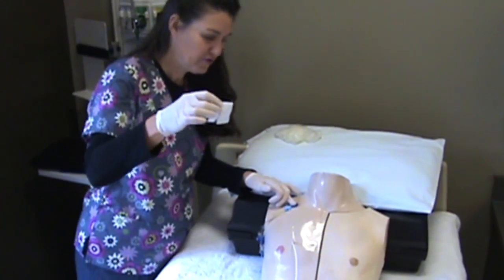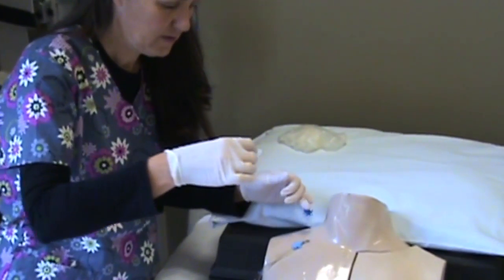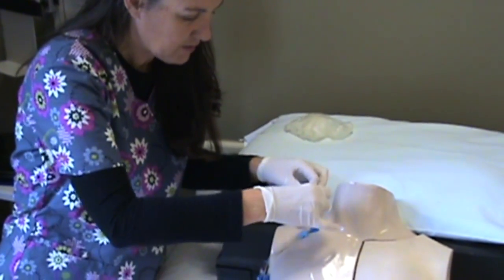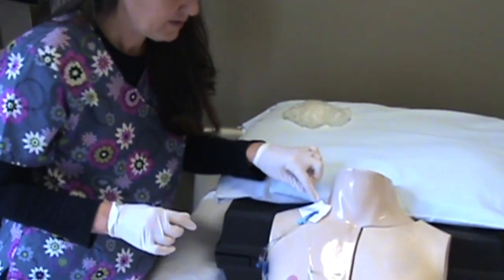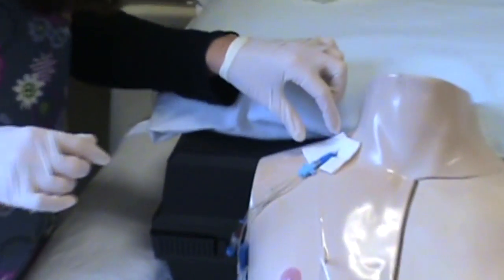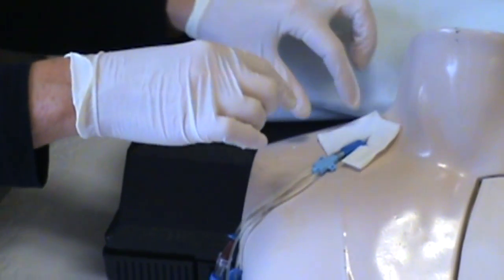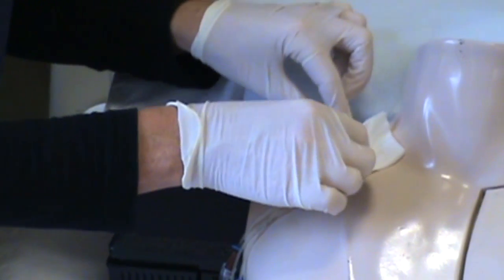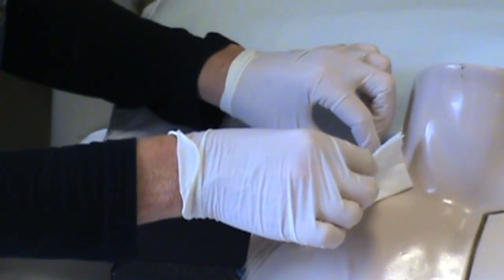This little drain sponge right here is meant to go right here if it's really draining or bleeding under the tegaderm. But most of the time you want to see your site, so you will leave this little drain sponge off, out of the way.